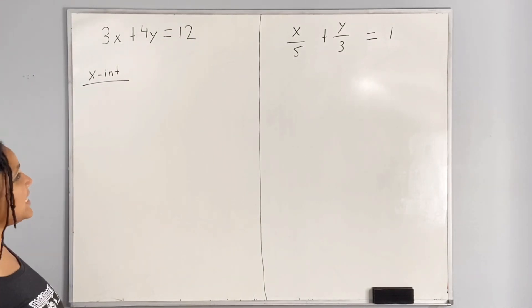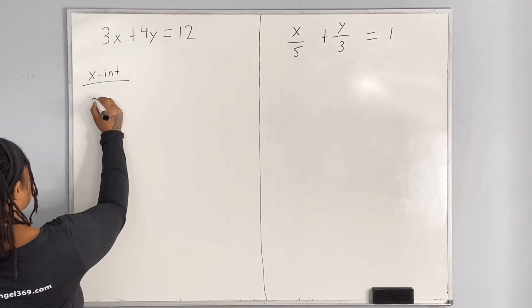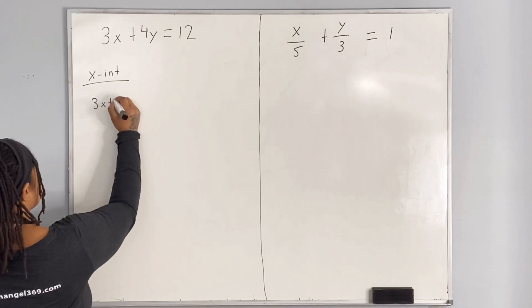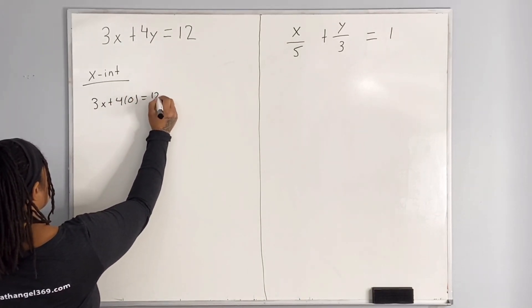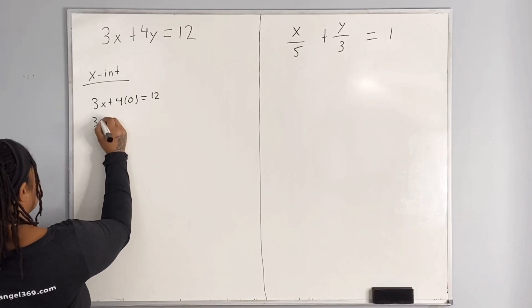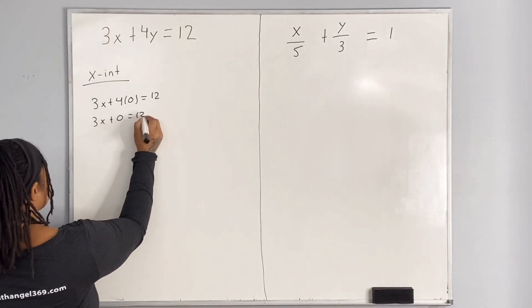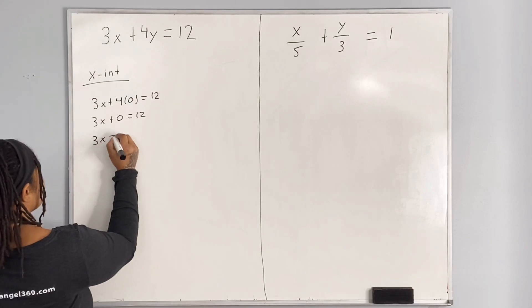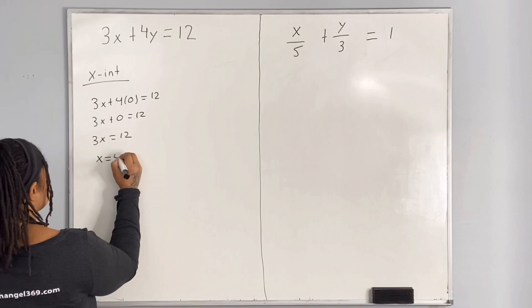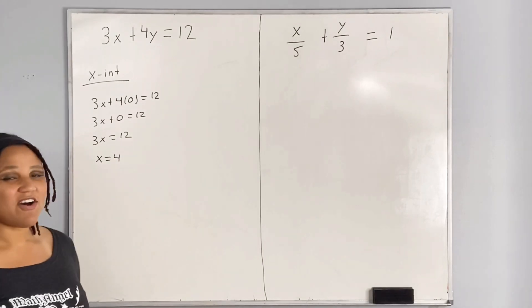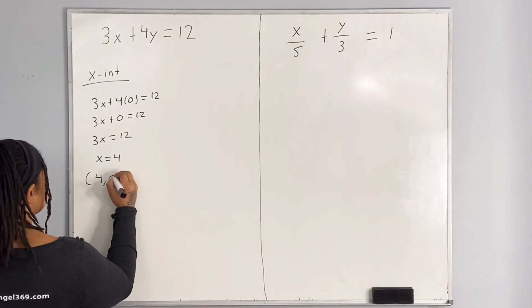we replace y with 0 and solve for x. So we have 3x plus 4 times 0 is equal to 12, which means we have 3x plus 0 is equal to 12, which means we have 3x is equal to 12, and which means we have x is equal to 4. So we write our x-intercept as (4, 0).